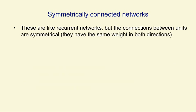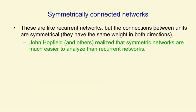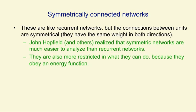Quite different from recurrent nets are symmetrically connected networks. In these, the connections between units have the same weight in both directions. John Hopfield and others realised that symmetric networks are much easier to analyse than recurrent networks. This is mainly because they're more restricted in what they can do, and that's because they obey an energy function. So they can't, for example, model cycles — you can't get back to where you started in one of these symmetric networks.